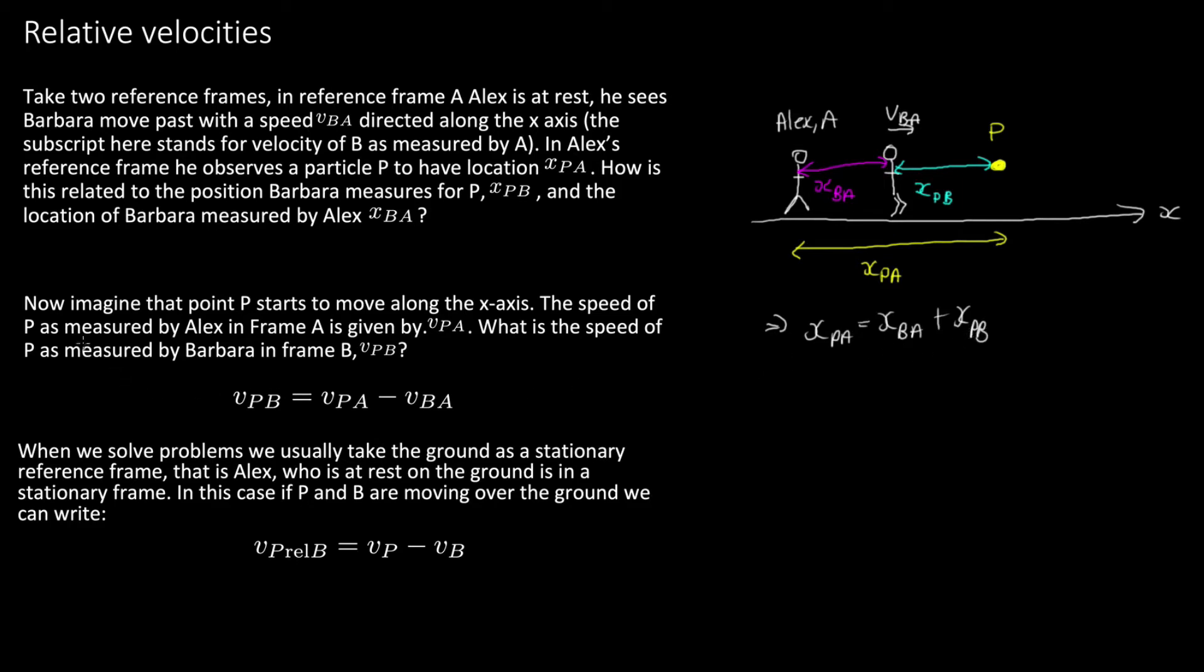Next we're asked to now imagine that point p starts to move along the x axis. The speed of p measured by Alex in frame a is given by vpa. That's measured by Alex, not by Barbara. And we're asked what is the speed of p as measured by Barbara in frame b? Which is we're trying to find vpb.